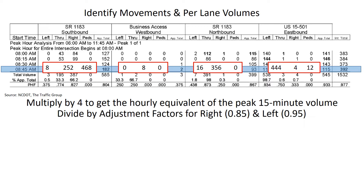Next, we need to divide by adjustment factors for right turns and left turns. We make this adjustment because there's an effect on the operations of the intersection — each right and left turning vehicle affects operations more than a through movement. The right turn has a larger effect because a vehicle slows down more than with a left turn, since there's usually a larger radius with the left turn. So we're dividing by 0.85 for right turns and 0.95 for left turns.